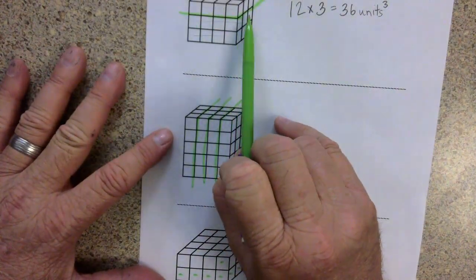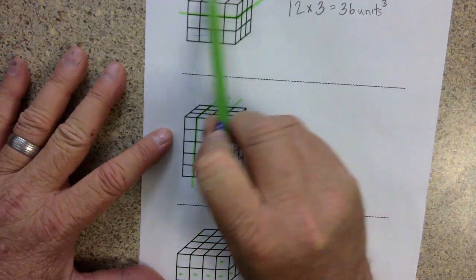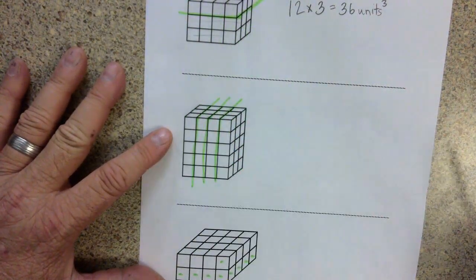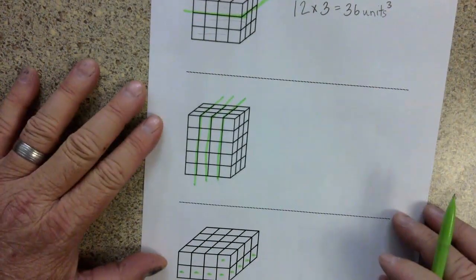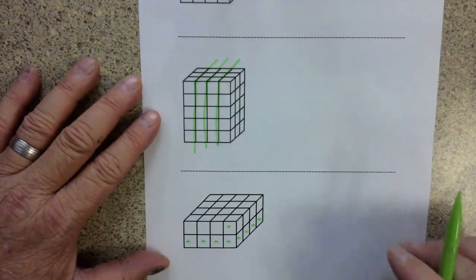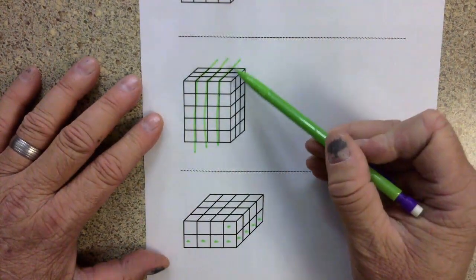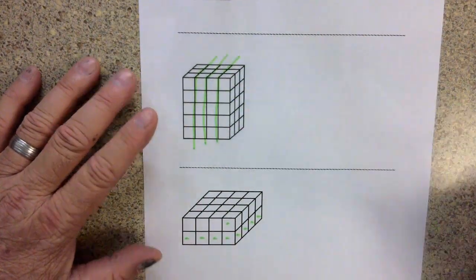So most students are seeing it this way. They're looking at the top layer and then figuring out how many layers there are. Some kids are seeing it more like a loaf of bread and they're slicing it vertically.